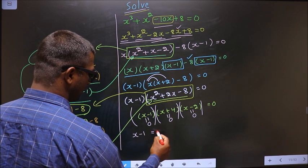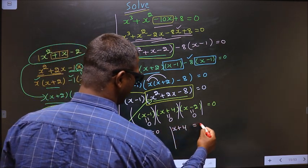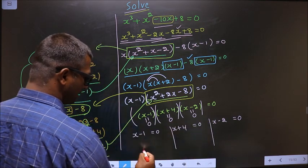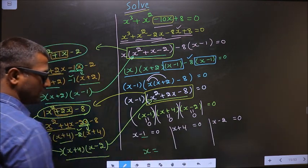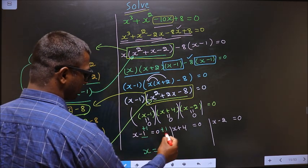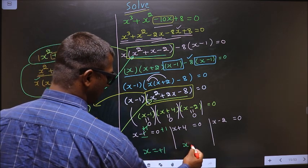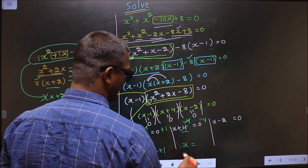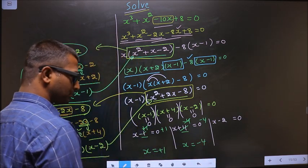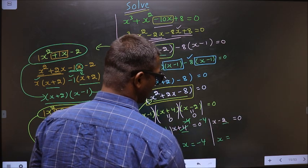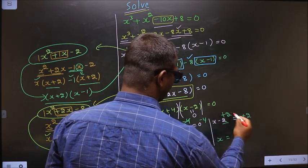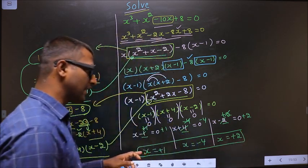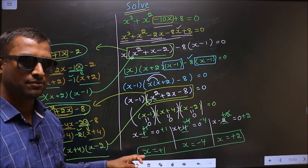That is x minus 1 equal to 0, x plus 4 equal to 0, x minus 2 equal to 0. Now to get the value for x, remove minus 1 by adding 1, so x equal to plus 1. Here to get x, remove plus 4 by subtracting 4, so x equal to minus 4. Here to get x, remove minus 2 by adding 2, so x equal to plus 2. So these are the values we got for x — this is our answer.